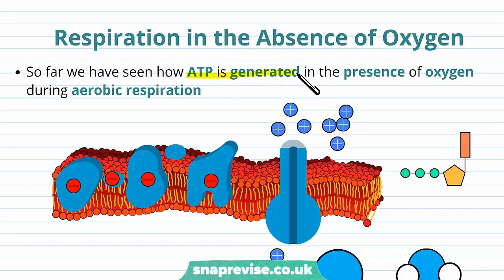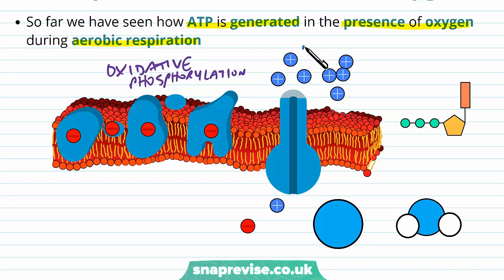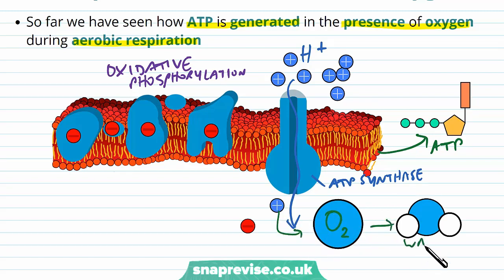So far in our videos we've seen how ATP is generated through aerobic respiration. Remember the purpose of respiration is to make ATP, and at the end of respiration we have the process of oxidative phosphorylation, where hydrogen ions or protons go down their gradient through an enzyme called ATP synthase to produce ATP. When oxygen is present it acts as the final electron acceptor to make water.